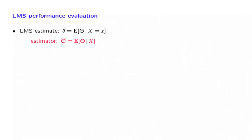Least mean squares estimation is remarkable because it has such a simple answer. The way to come up with estimates, if what you care about is to keep the mean squared error small, is to just report the conditional expectation — which is a number once you have obtained some values of the data, or more abstractly, a random variable if you do not know ahead of time what data you're going to obtain.